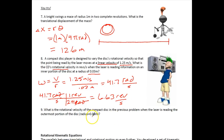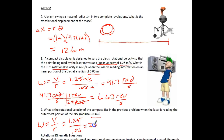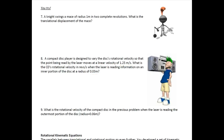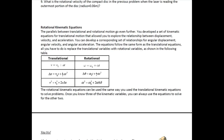Now, what is the rotational velocity when the laser reads the outermost portion of the disc at 0.06 meters? Angular velocity = 1.25 / 0.06 = 20.8 radians per second. Converting to revolutions per second: 20.8 × (1 / 2π) ≈ 3.32 revolutions per second — a little more than half the inner value.